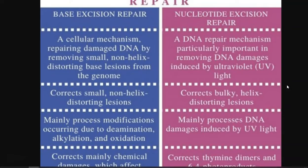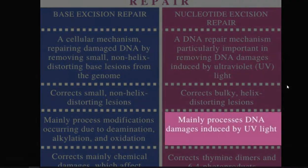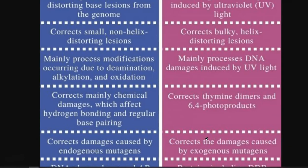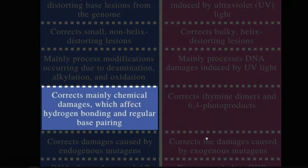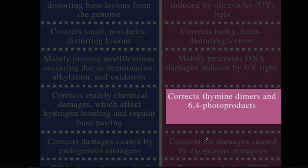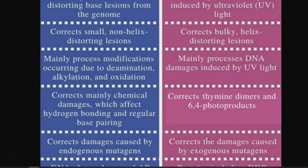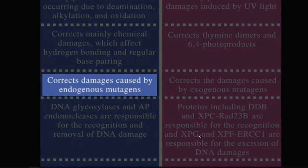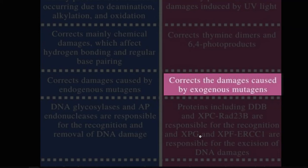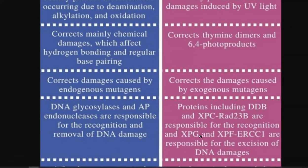Nucleotide excision repair mainly processes DNA damages caused by UV light exposure. Base excision repair corrects chemical damages which affect hydrogen bonding and regular base pairing properties of the nucleotide, whereas nucleotide excision repair corrects thymine dimers and other photo products formed due to UV induction. Thus, base excision repair corrects damage caused by endogenously formed mutagens, whereas nucleotide excision repair corrects damage formed by exogenous mutagens — mainly the exterior source of UV radiation that falls on the cells.